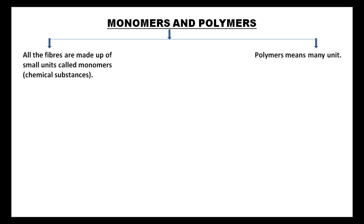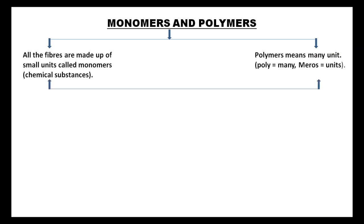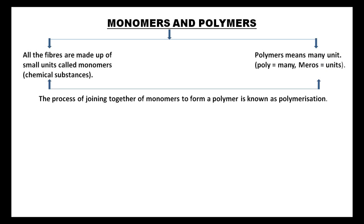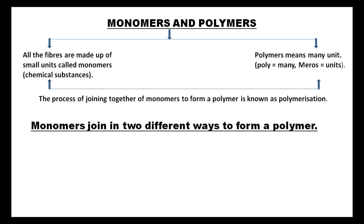The word polymer means many units — poly means many and meros means units. The process of joining together of monomers to form a polymer is known as polymerization. Monomers join in two different ways to form a polymer.